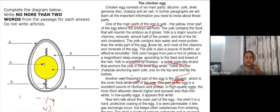Another very important part of the egg is albumin. The albumin which is the inner thick white part of the egg, so inner thick white part of the egg will be what? Number four.